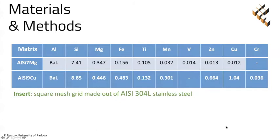The composition of the two analyzed alloys are summarized in this table. The major difference lays on the silicon and copper contents, which influence the alloy fluidity and mechanical properties respectively. Moreover, the difference in iron content could influence the inter-metallic composition at the interface between the matrix and the insert.